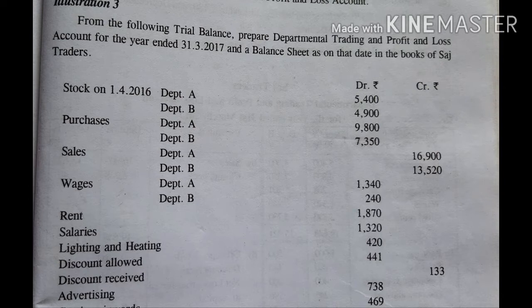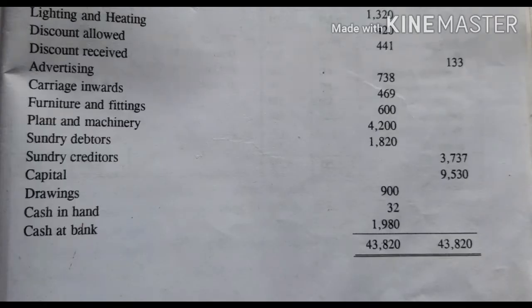Lighting and heating: 420 rupees. Discount allowed: 441 rupees. Discount received: 133 rupees. Advertising: 738 rupees. Carriage inward: 416 rupees. Furniture and fittings: 600 rupees.